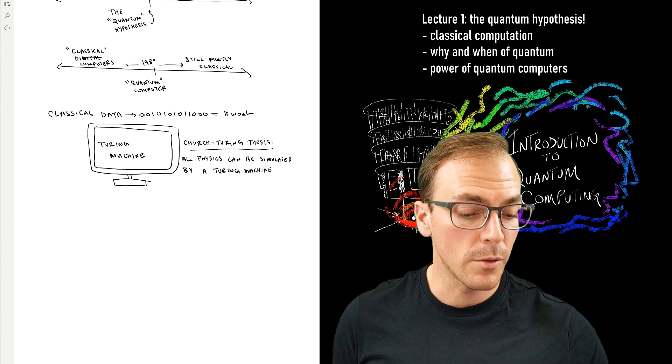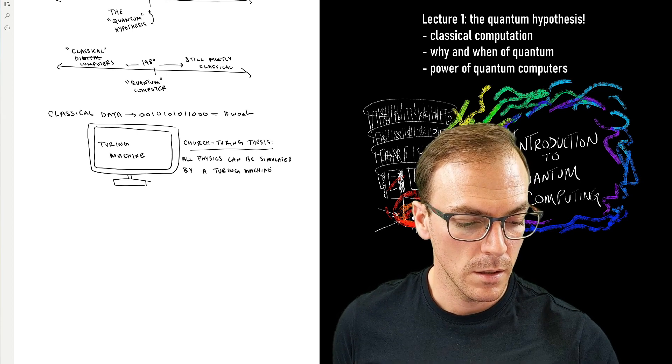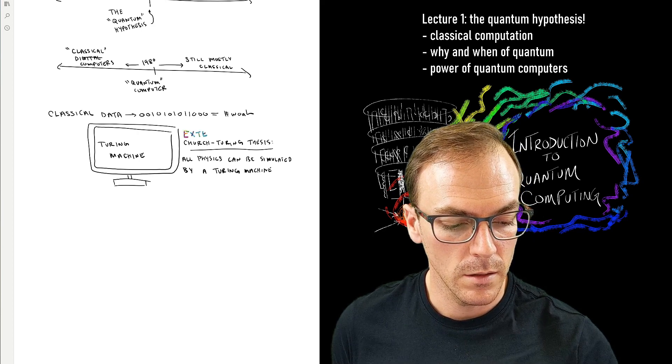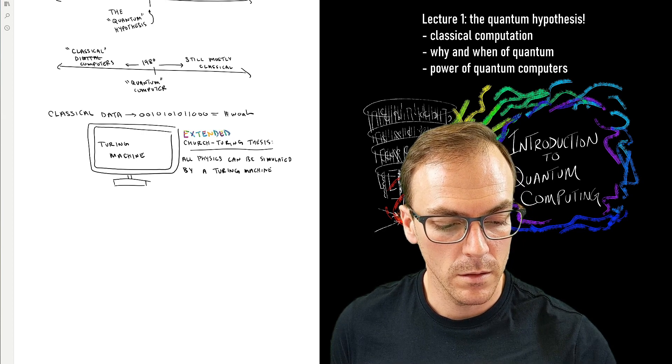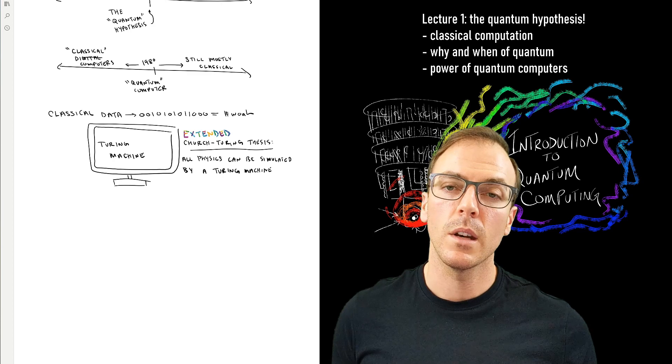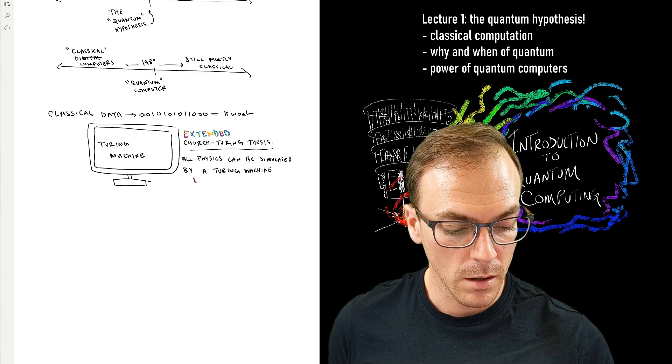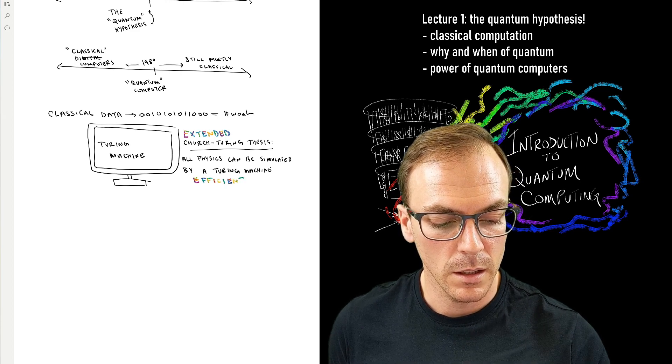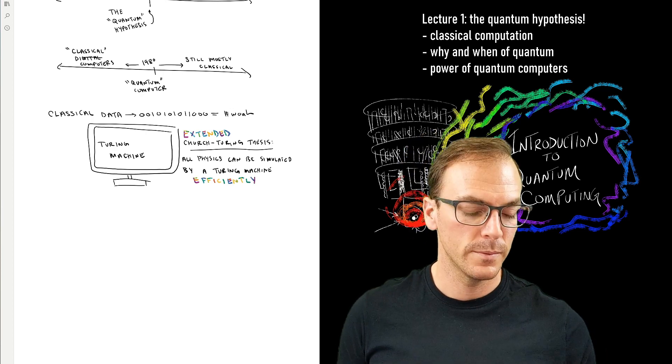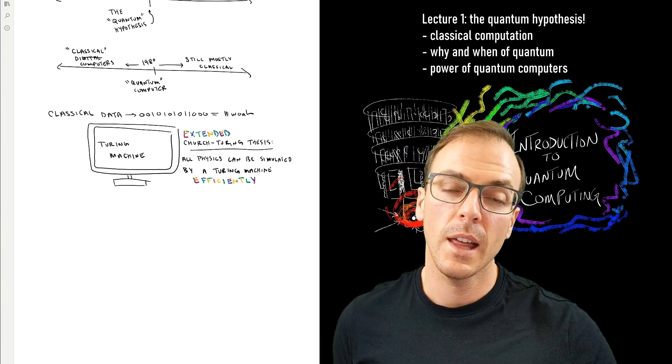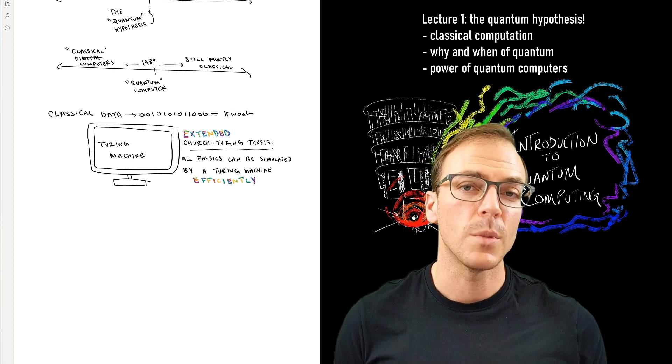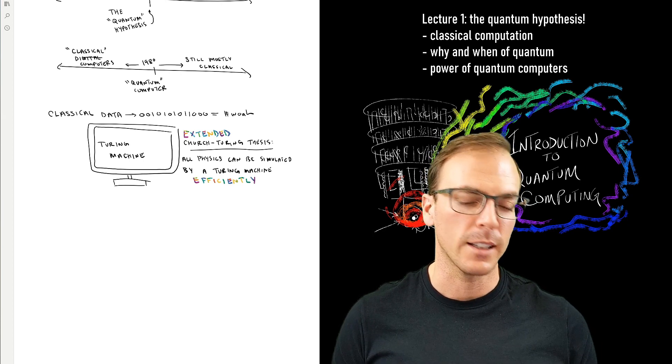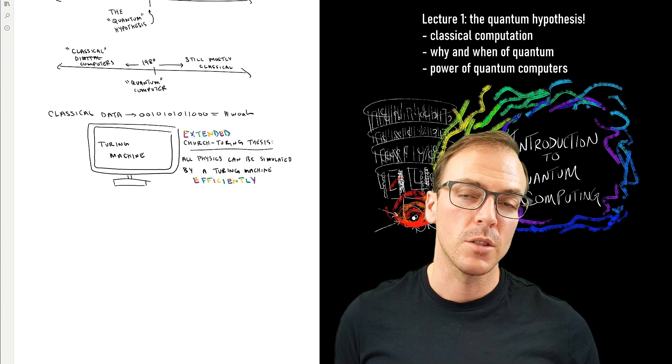And there is another version of this. That's called the Extended Church-Turing thesis. And the statement is the same, it just adds one word, which is, that can be done. Moreover, it can be done efficiently. Okay, so that has a technical definition. And throughout this subject, we'll have the opportunity to understand the technical details of all of these definitions. But I'll just give you a flavor of it now.